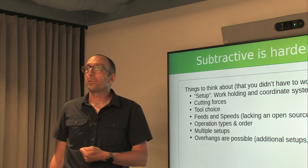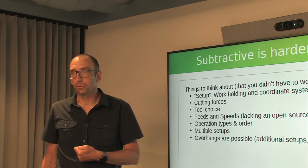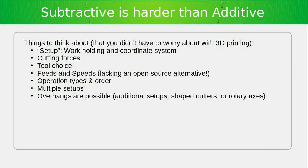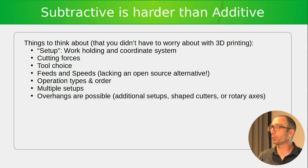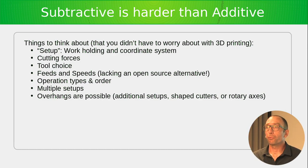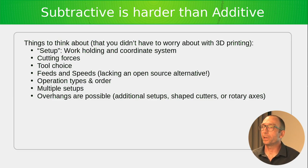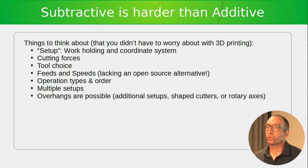Subtractive processes tend to be harder — there are more process-specific things to keep in mind. With 3D printing there's no force applied to the part as you produce it. With subtractive, a cutting tool is bumping into the workpiece as you remove material. The first thing to think about when designing a subtractive part is how you're going to hold the part as you're cutting it — often in a vice or a custom fixture plate, or attached directly to a sacrificial spoil board.